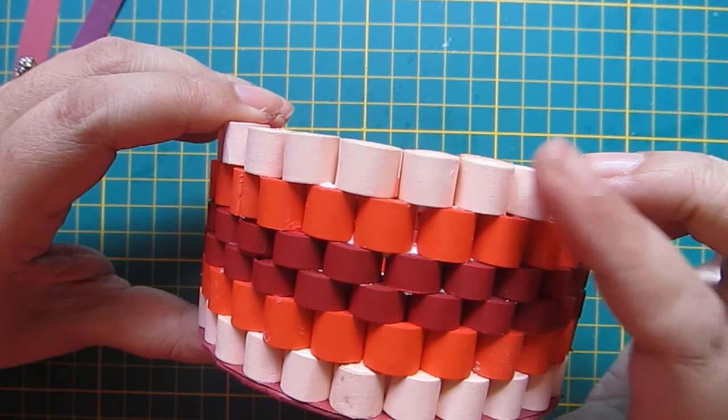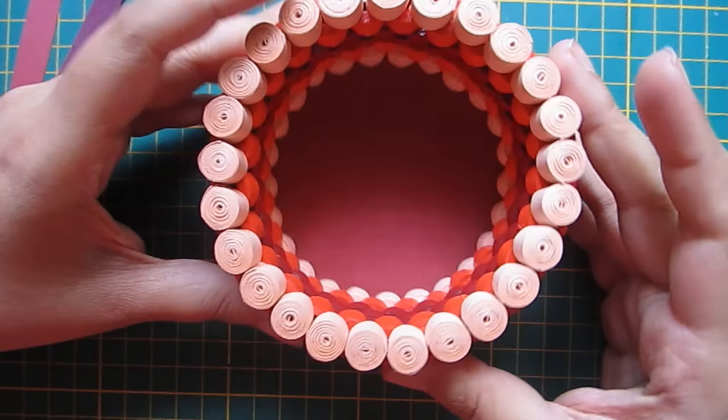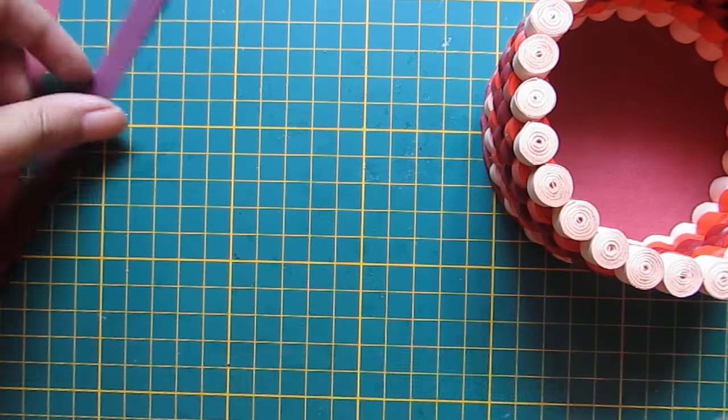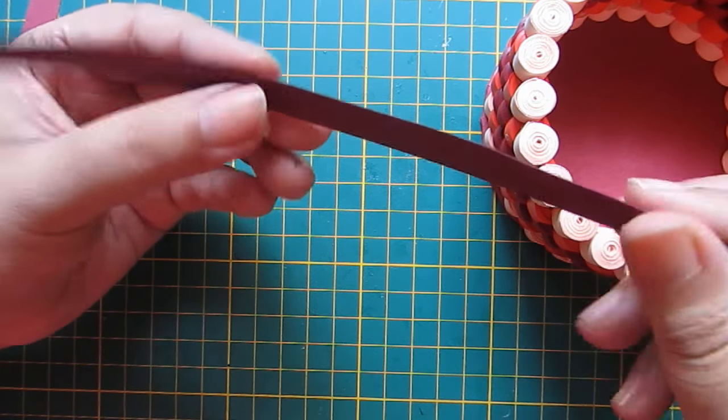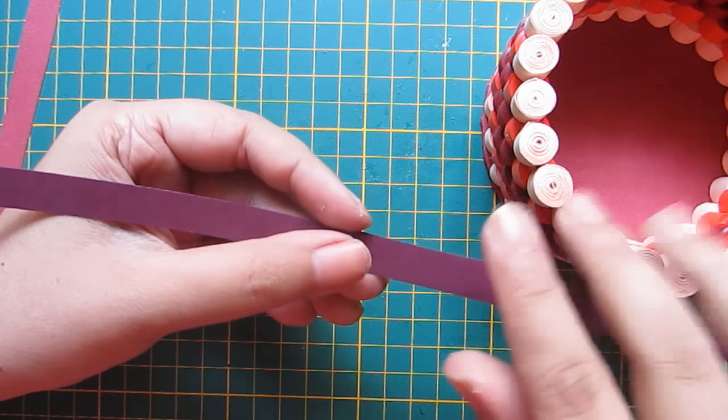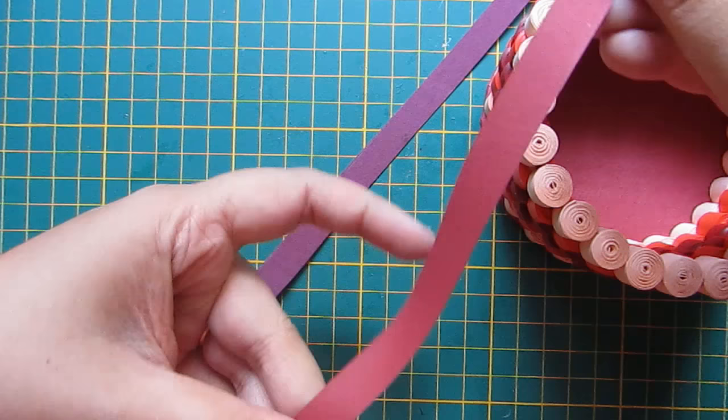The basket will look like this. So my base is done. Now to make the handle I am using this cardboard strip - this is thick cardboard, it measures 45 centimeters by 1 centimeter - and with the same size I am using this brown color paper strip which also measures 45 centimeters by 1 centimeter.